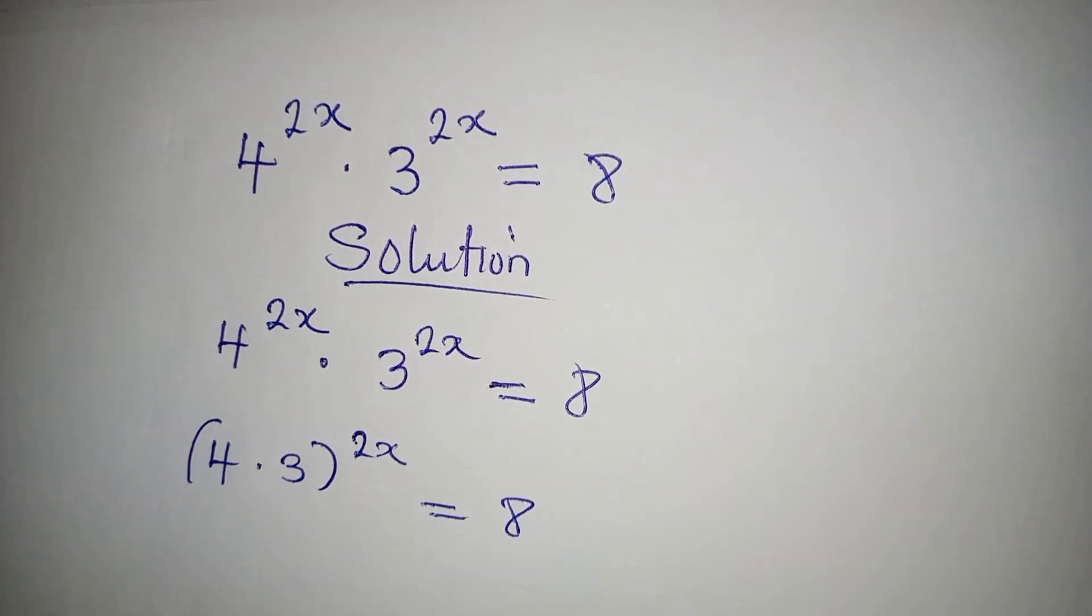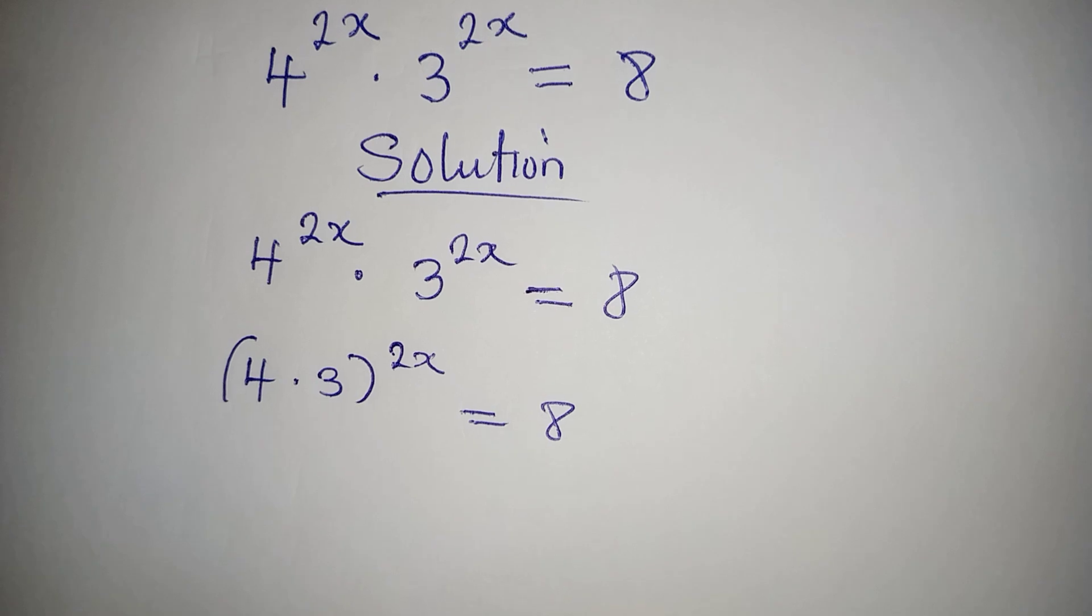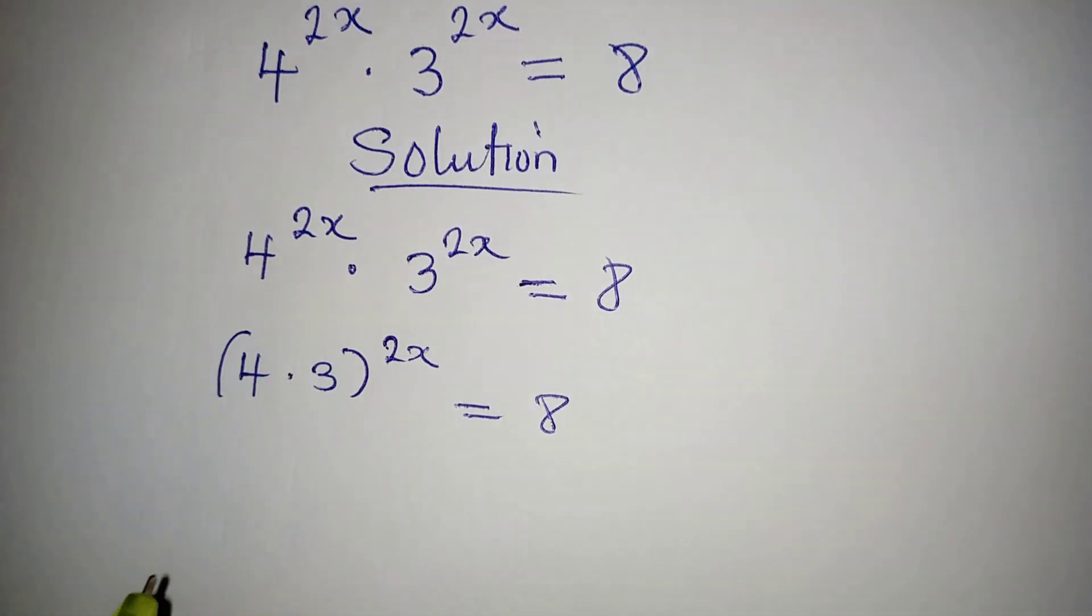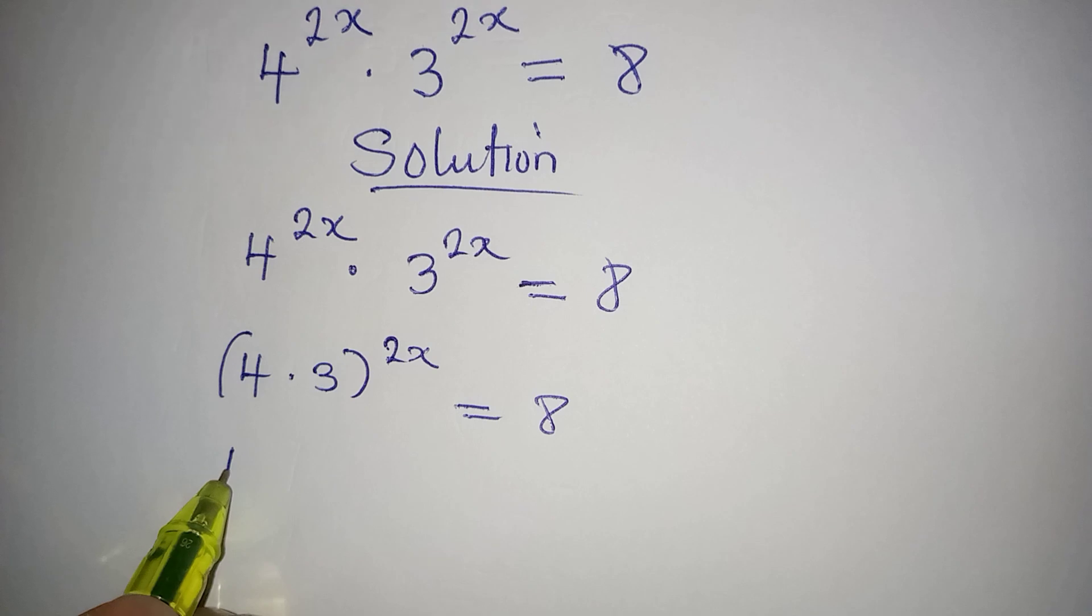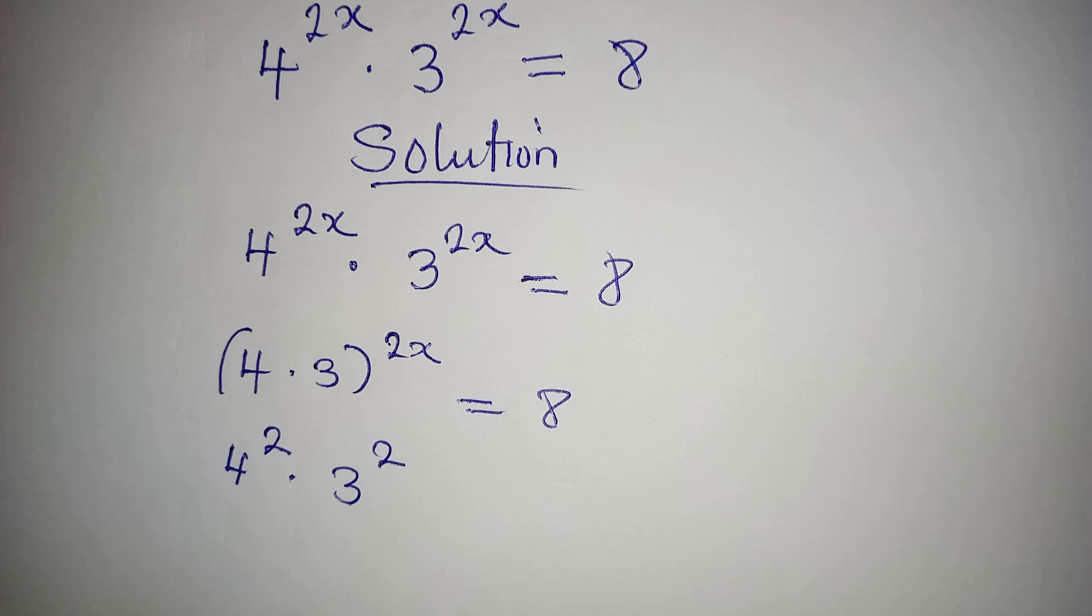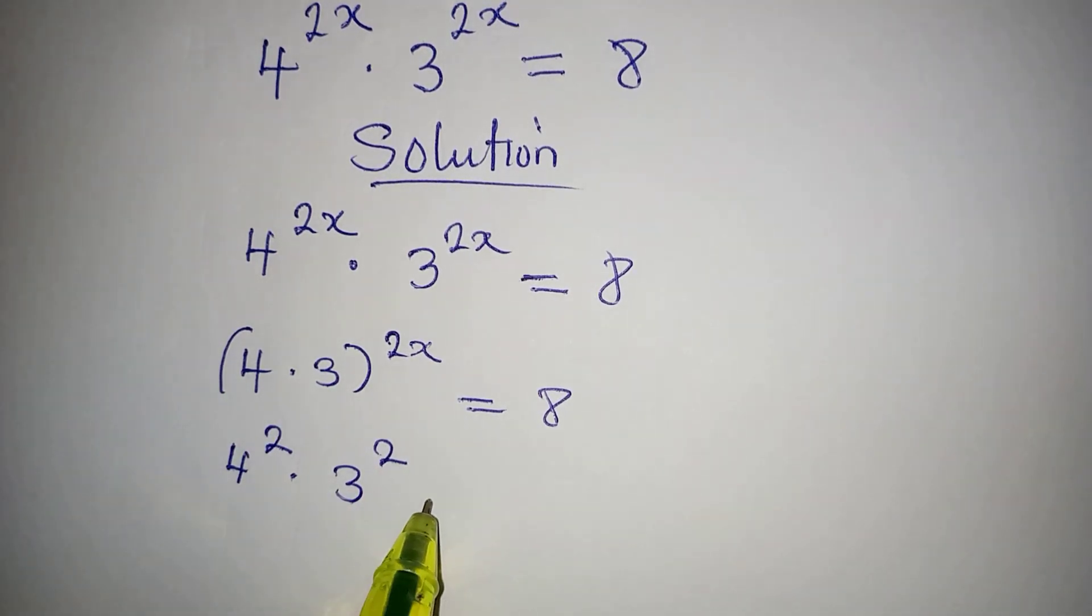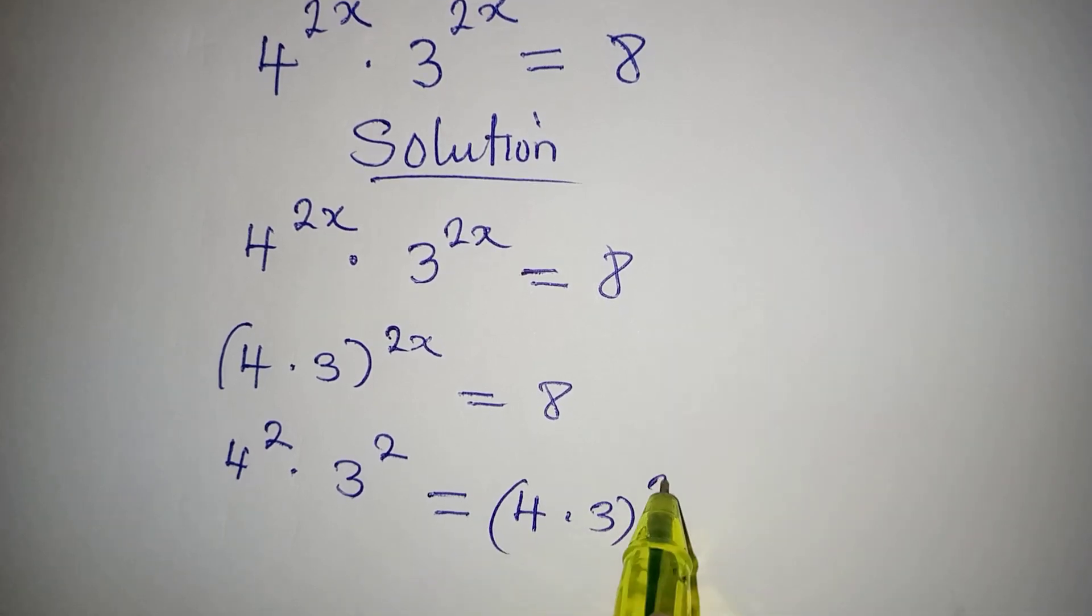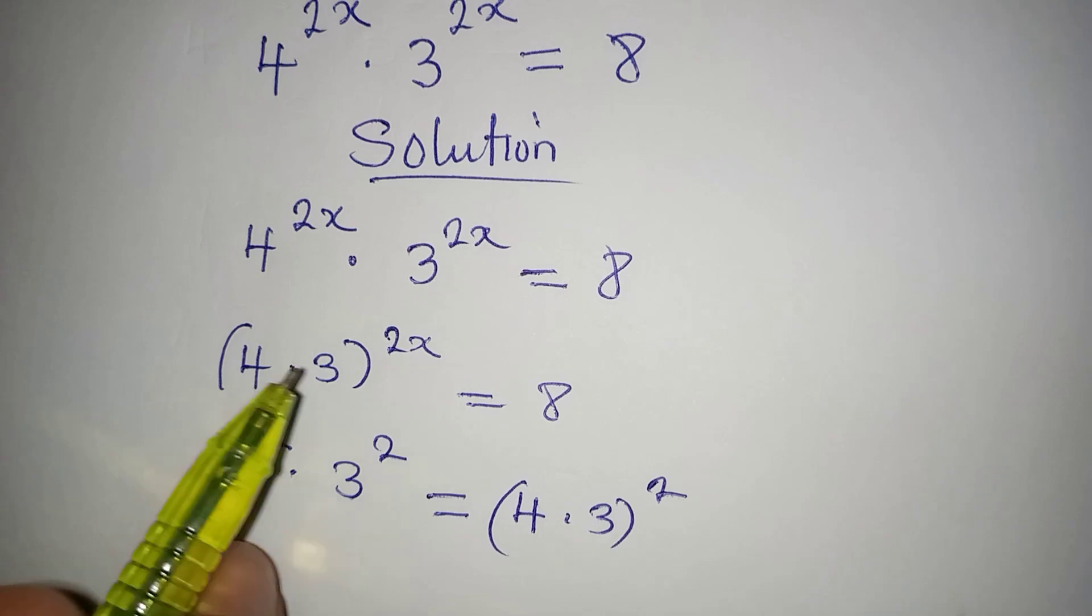Now some persons might doubt what we have done, but let's confirm it. Imagine we have just 4 to the power of 2 multiplied by 3 to the power of 2. This will be the same thing as 4 times 3 to the power of 2, according to what I have done.